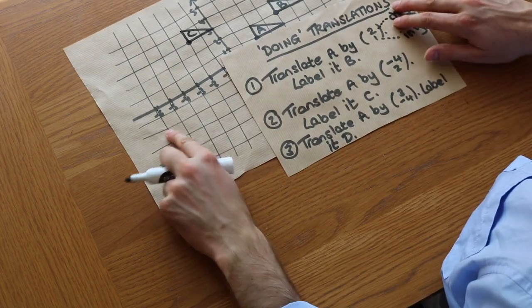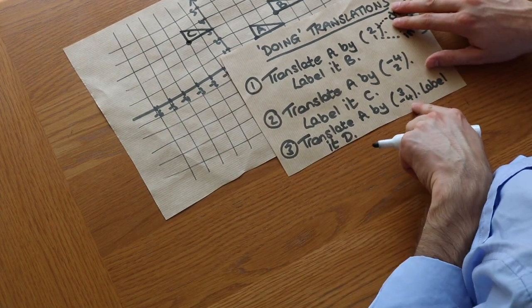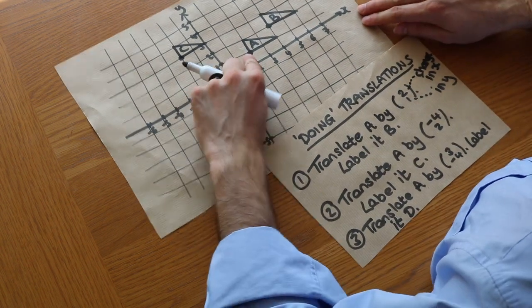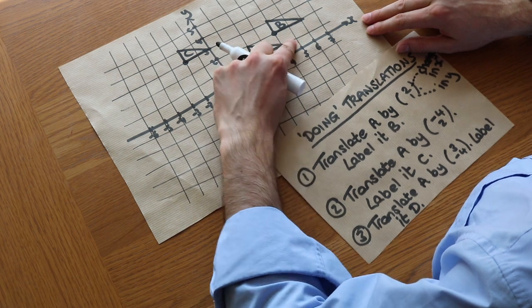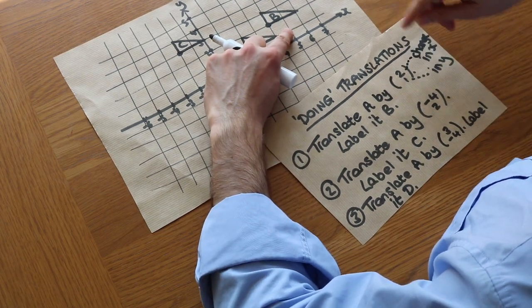And then finally, question 3. Translate A by (3, -4). So starting from this point again, the X value is changing by 3. An increase of 3. 1, 2, 3. And then the Y value is changed by -4.